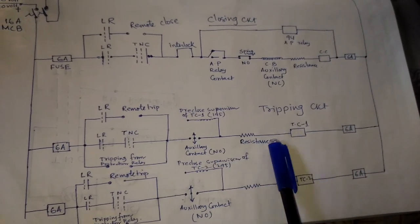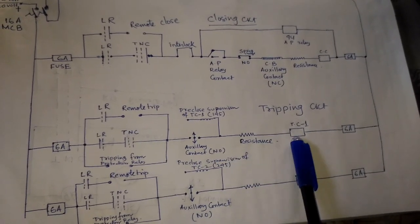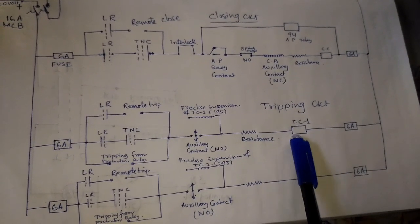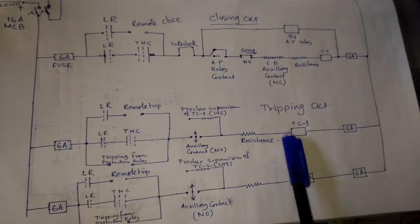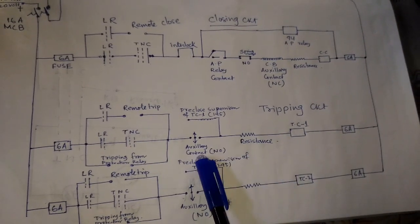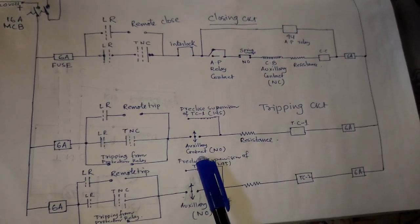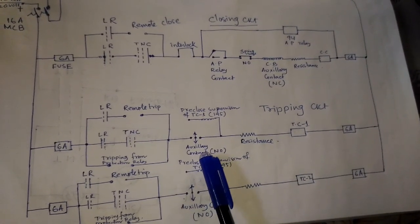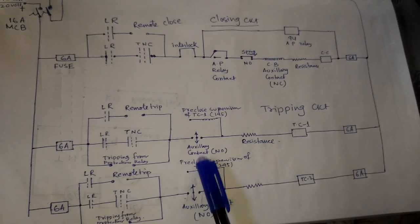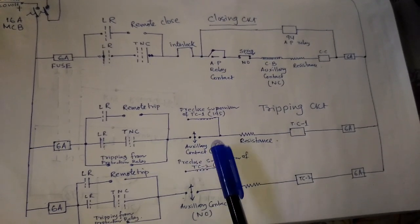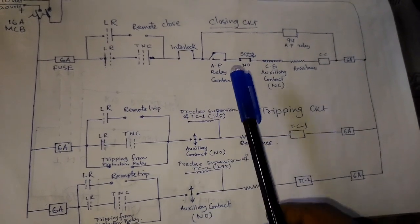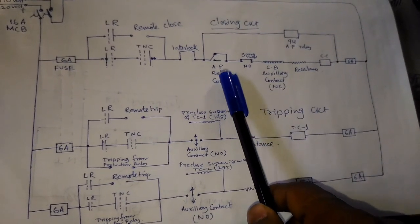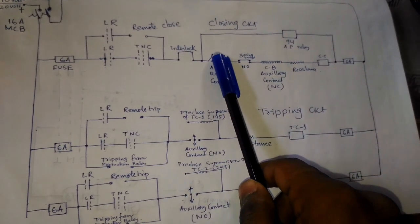When you operate the trip command, this NC contact is converted to NO contact, and the anti-pumping relay contact becomes NO contact.